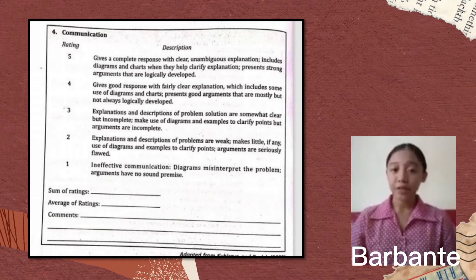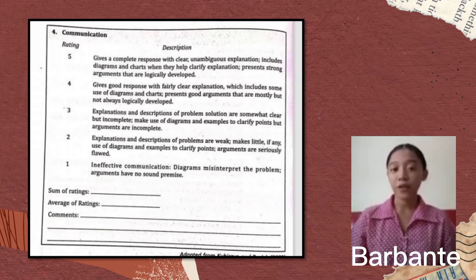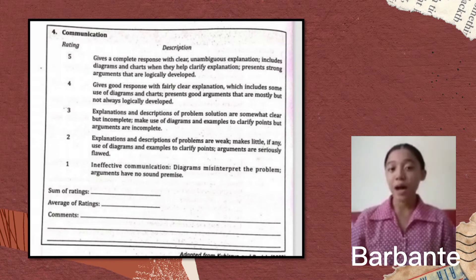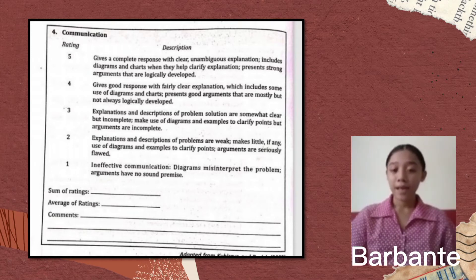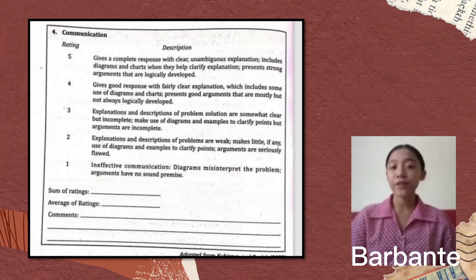The second picture depicts a criteria for performance rating to be completed by the teacher, composed of a standard or principle of judging, evaluating, or selecting. As shown, there are four objectives: quality of reflection, mathematical knowledge, strategic knowledge, and communication. In every objective, there is a rating or achievement level indicating the level of student performance — five is the highest rating and one is the lowest. Each rating has a descriptor to consider how students behave in specific relevant situations. It is important for both learners and teachers to identify and evaluate scoring criteria to achieve standards with efficiency, develop ownership, and reliability.